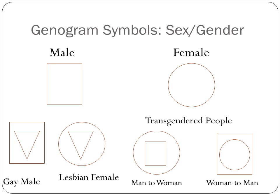Similarly, a lesbian female would have a circle with a triangle in the middle. If someone in your genogram is transgender — for example, born male, had sex reassignment surgery, and is now female — you would put the circle as the larger shape to denote female, and inside that you would put the square to denote that they were once male. Conversely, if someone was born a woman and is now living as a man, you would put the square on the outside as the larger shape, and the circle inside to designate that at one point they were female.